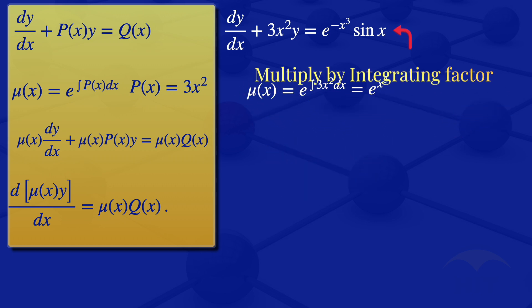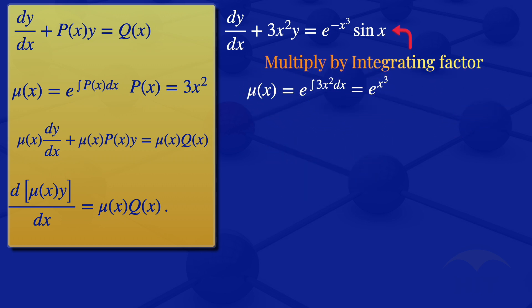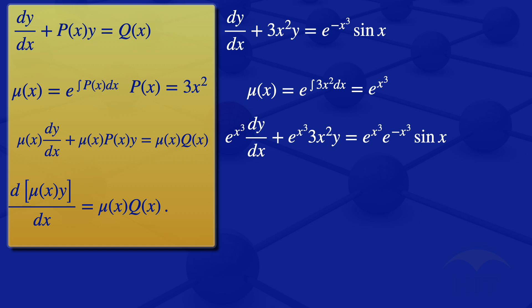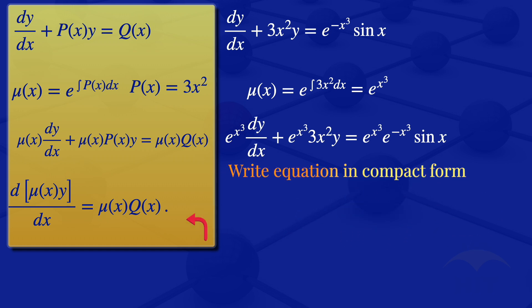The next step is to multiply the equation by the integrating factor. We have exponent of X cubed multiplied by the derivative of Y with respect to X plus exponent of X cubed multiplied by 3X squared multiplied by Y is equals to exponent of X cubed multiplied by exponent of minus X cubed multiplied by sine X. The next step is to write our equation in compact form.